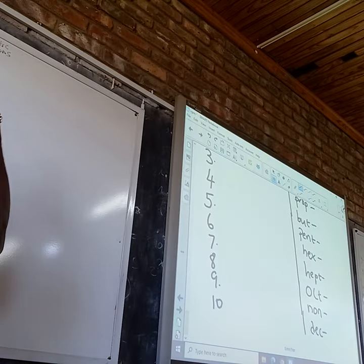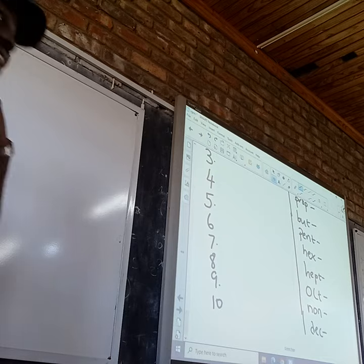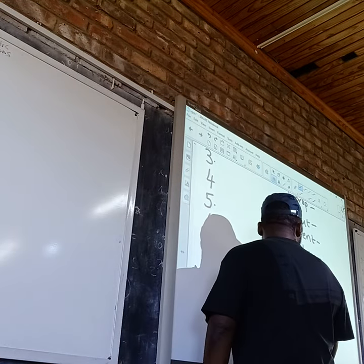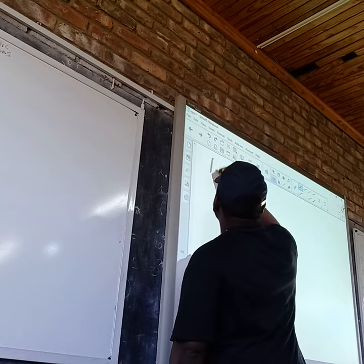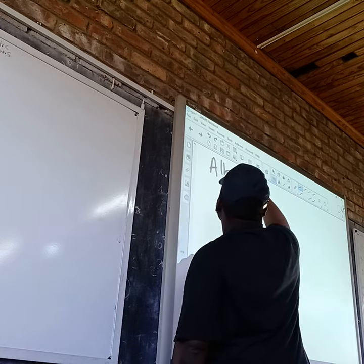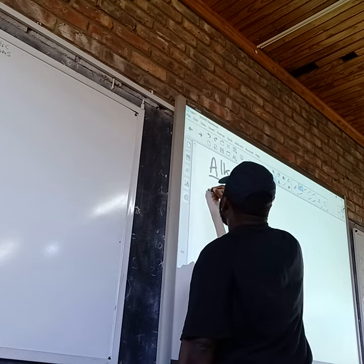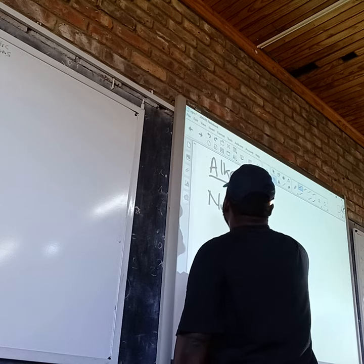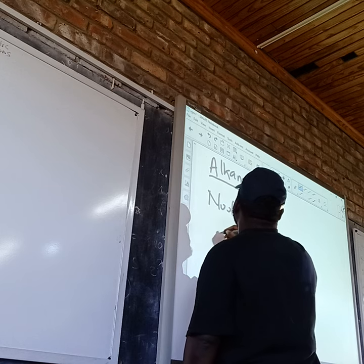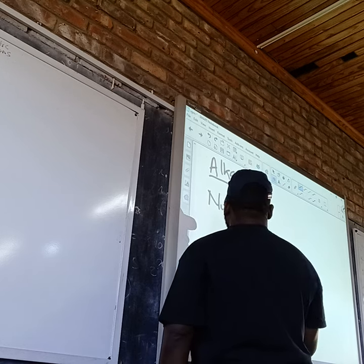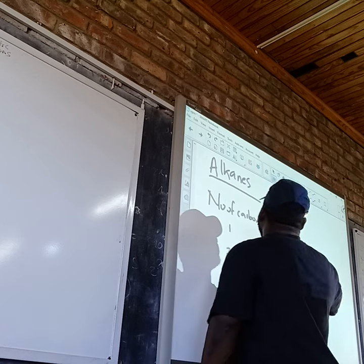Now, looking at our different homologous series, I would like to start with the first one. For the first homologous series we give them their names. Let's look at our alkanes. Alkanes have the following number of carbons: 1, 2, 3, 4, 5, 6, all the way up to 9 — and the prefix.